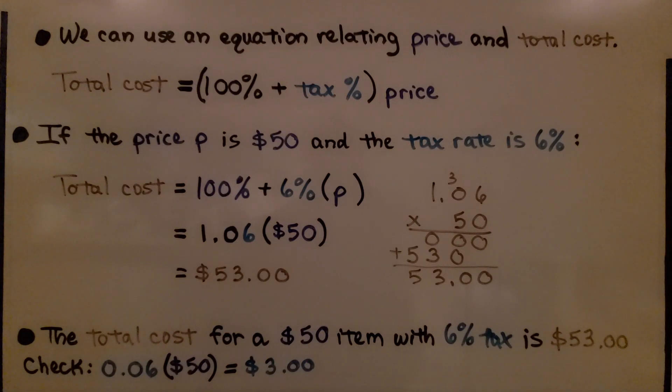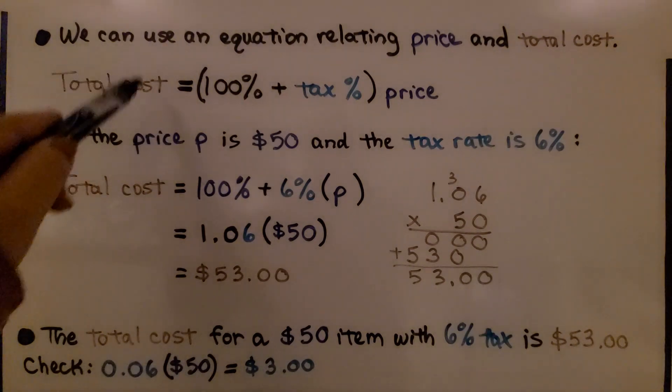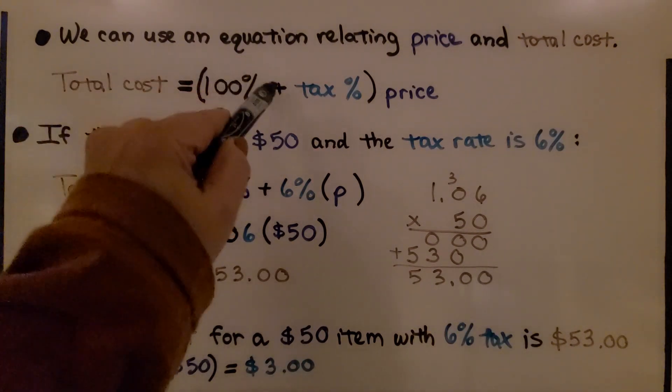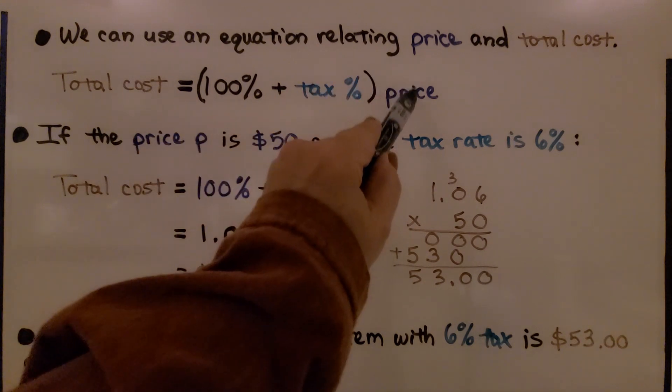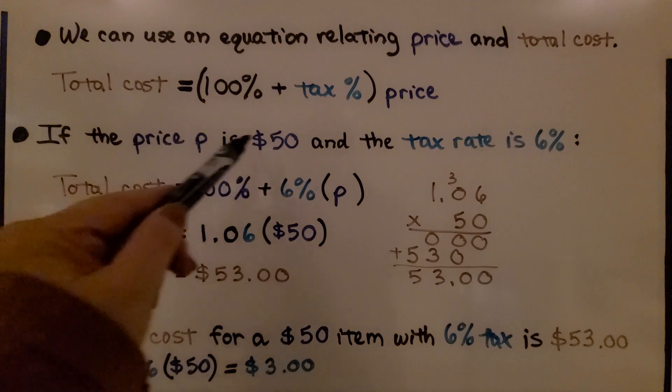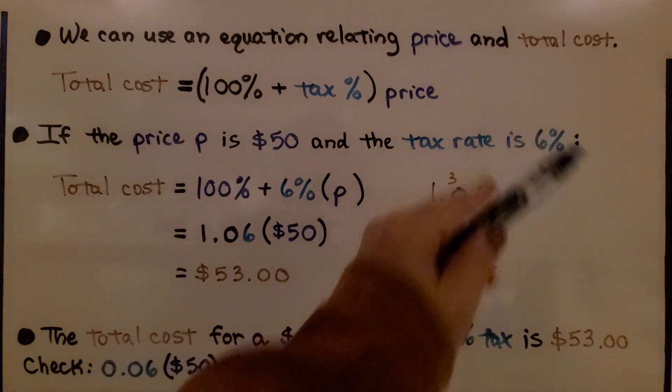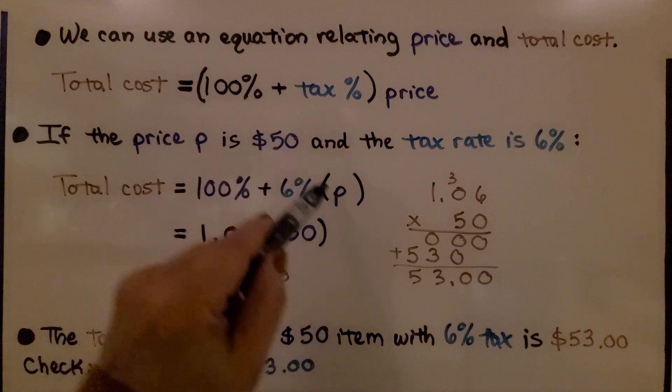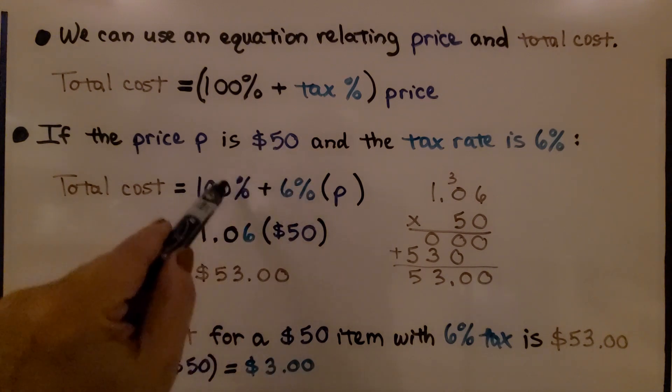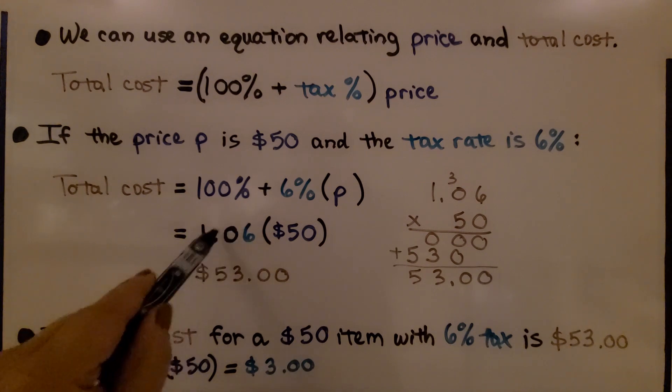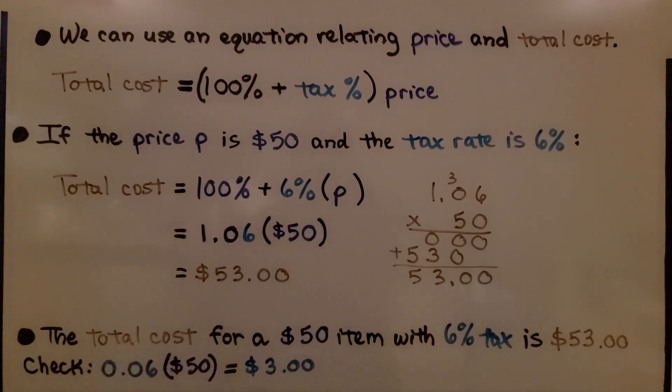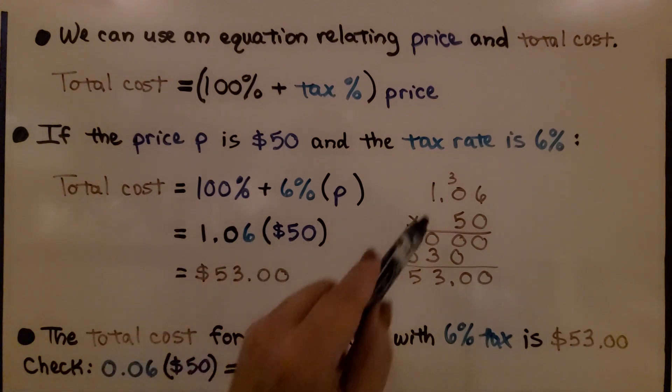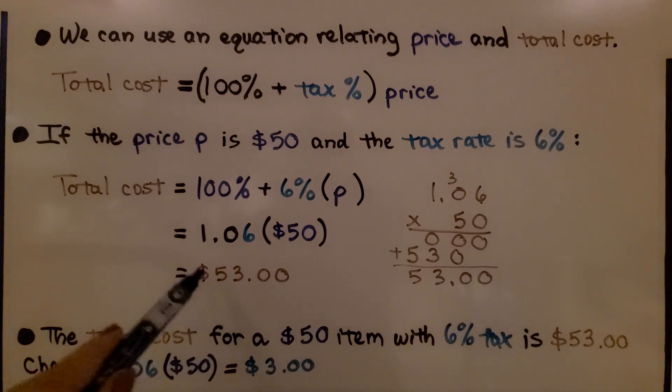Here's another example of using an equation relating price and total cost. We have our total cost and it's equal to that 100% of the price plus whatever the tax percentage is multiplied by the price. So if the price P is $50 for some item and the tax rate is 6%, we're going to have 100% plus 6% for that tax rate times P, that $50. We put the 100 and the 6% together. We get 1.06 as a decimal. We're going to multiply it by P, that's $50, and 1.06 times $50 is $53. We know the total cost is $53. And the total cost for a $50 item with 6% tax is $53.